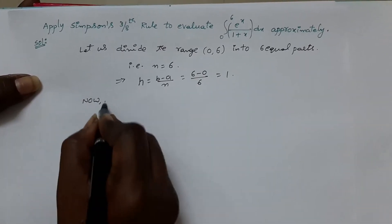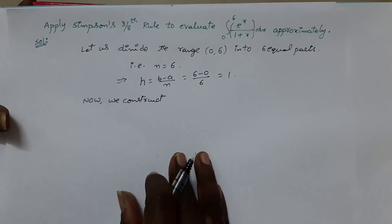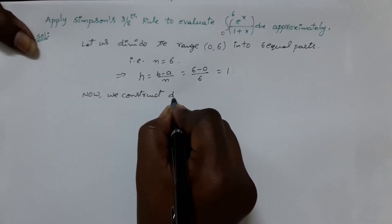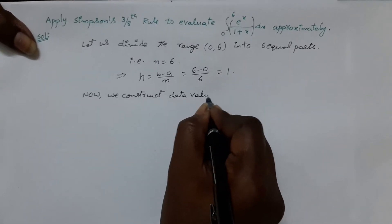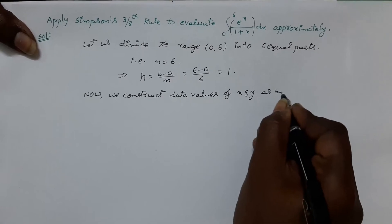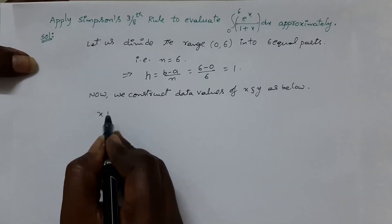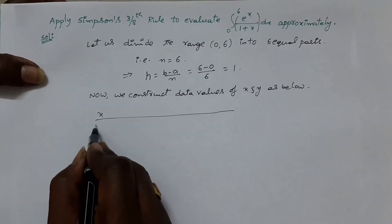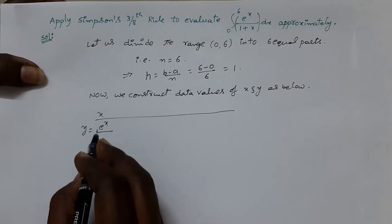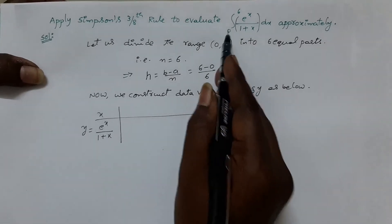Now, we construct the data values for x and y as below. Write x values and below y values. y is the given function. Sometimes, it can also be represented with f of x. Always, we have to start the x values with lower limit, which is 0.